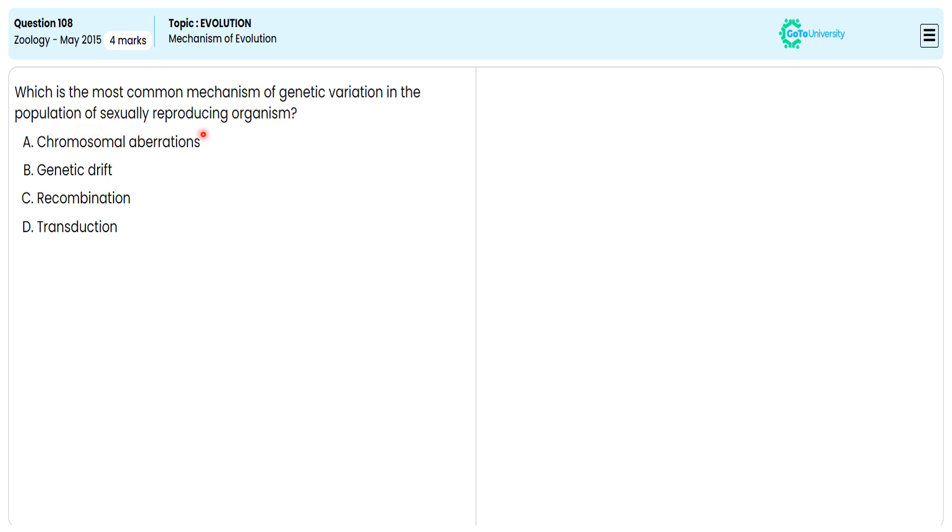In this multiple choice question from the given options, they are directing us to specify the correct option illustrating the common mechanism of genetic variation in the population of sexually reproducing organisms. For this, let me avoid the wrong options with the appropriate explanation so that we can conclude the correct option.